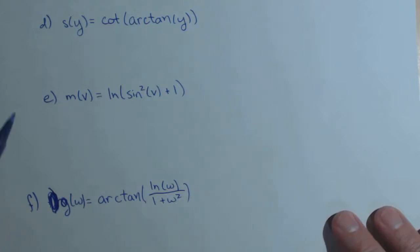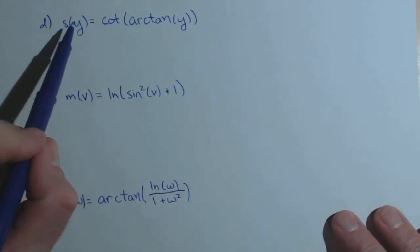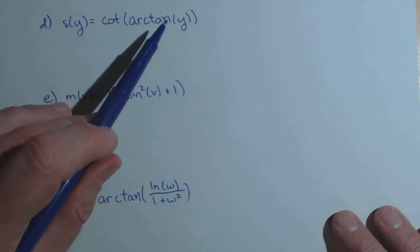In this video, we're going to look at a few derivative examples. First of which, s of y equals cotangent of arctangent of y.